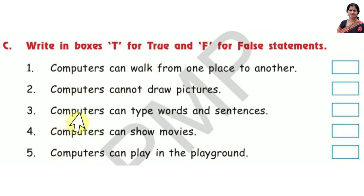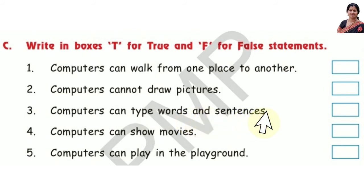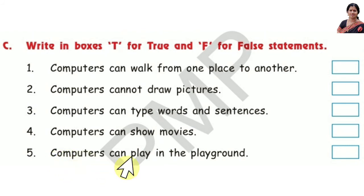Number 3: Computers can type words and sentences — True. Number 4: Computers can show movies — True. Number 5: Computers can play in the playground — False.